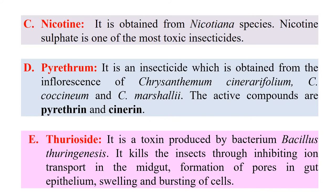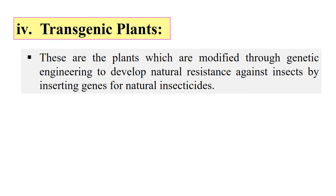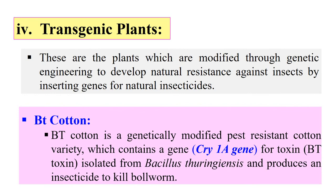Next, transgenic plants. Transgenic plants are those in which new genes have been introduced using the technique of recombinant DNA technology, giving resistance against certain pests. For example, BT Cotton — in BT Cotton, genes known as Cry1A genes were isolated from Bacillus thuringiensis and produce an insecticide that can kill the bollworm.